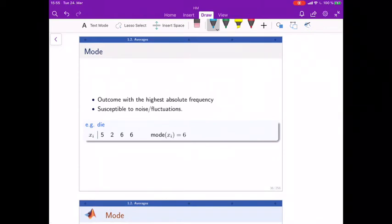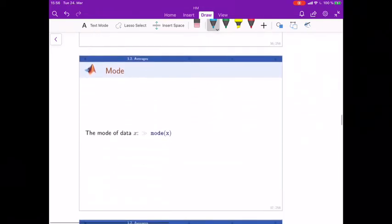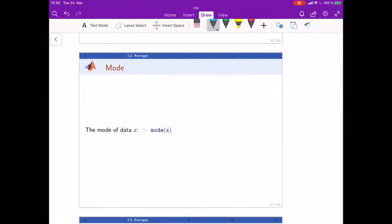Very rarely used but also interesting is the mode. It's basically just the outcome with the highest absolute frequency. So if the outcomes are five, two, six, six, then we've got two times the outcome of six, more often than any other number, so our mode is six. As simple as that. It exists in MATLAB as well as mode. If we have a large data set like here, it seems to follow a nice distribution as well.